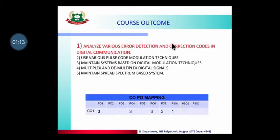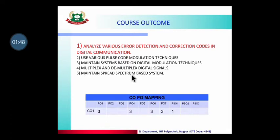Now the course outcomes — after completing the full subject of digital communication, what we will be able to do: after unit one we complete the part highlighted in red; after unit two we complete the second point; after unit three the third set of objectives; after unit four we will understand multiplexing and demultiplexing of digital systems; and after unit five we will be able to maintain spread spectrum based systems. Currently we are on unit one, so we will analyze various error detection and correction codes and digital communication systems.